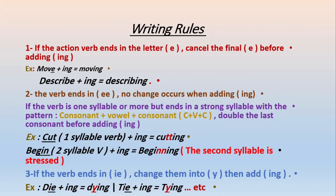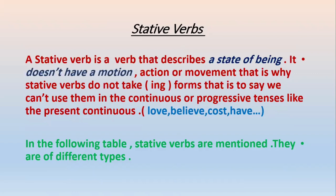Another rule: if a verb ends in 'ie,' we change 'ie' to 'y' and then add -ing. For example, 'die' becomes 'dying,' 'tie' becomes 'tying.' These are the writing and spelling rules for adding -ing.